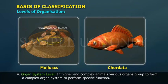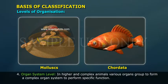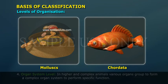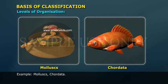At the organ system level, in higher and complex animals, various organs group together to form a complex organ system to perform a specific function. Example: molluscs.